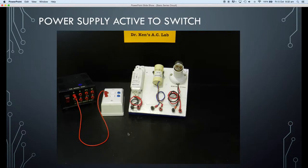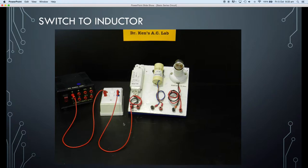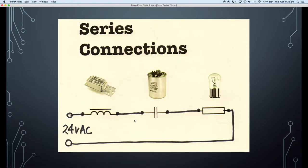Here's our first connection. I've come from the 12-volt terminal on the power supply and connected a red wire from the power supply to the switch — that's the first connection. Now I'm going to connect from the other side of the switch across to the beginning of the inductor. We now have a wire that connects our power supply active, in series with the switch, and the wire loops down into the start of the inductor. So all we've done is connect the power supply through the switch to the inductor.